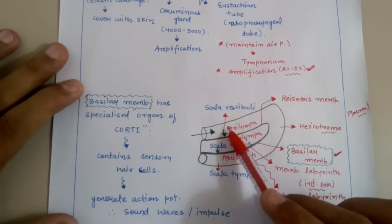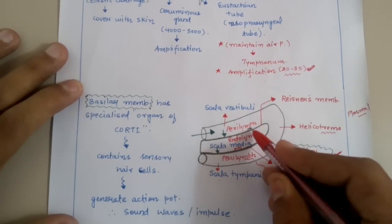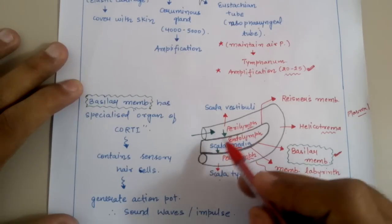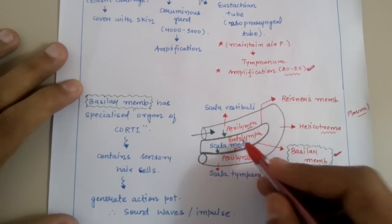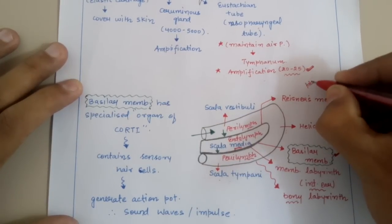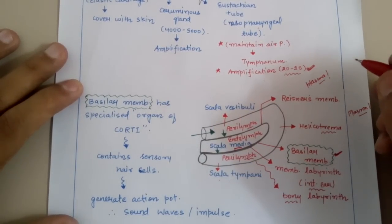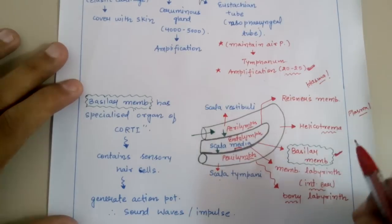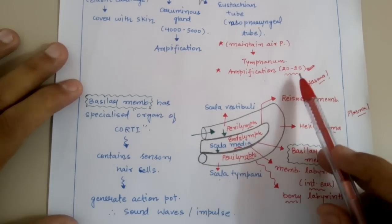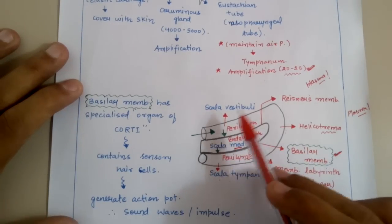The scala vestibule and the scala tympani are filled with a fluid known as perilymph, and the scala media — the middle chamber — is filled with endolymph. This endolymph is very much similar to plasma, which is a common fluid in humans and most organisms. So the scala media is filled with endolymph, which is somewhat similar to plasma.